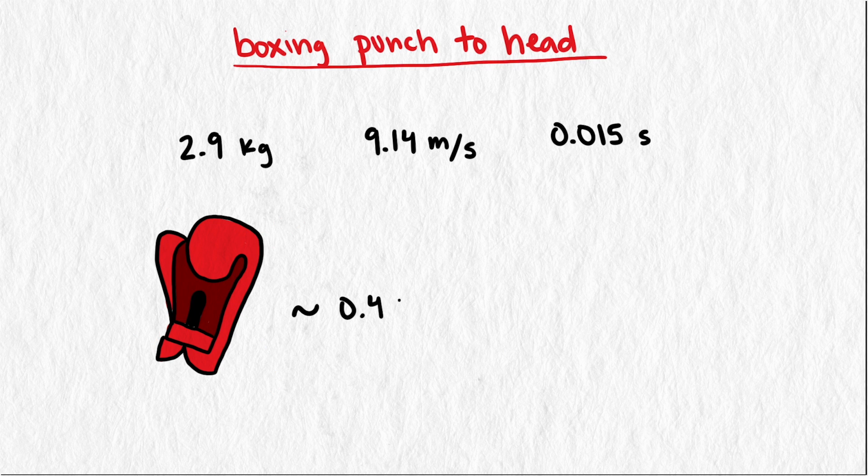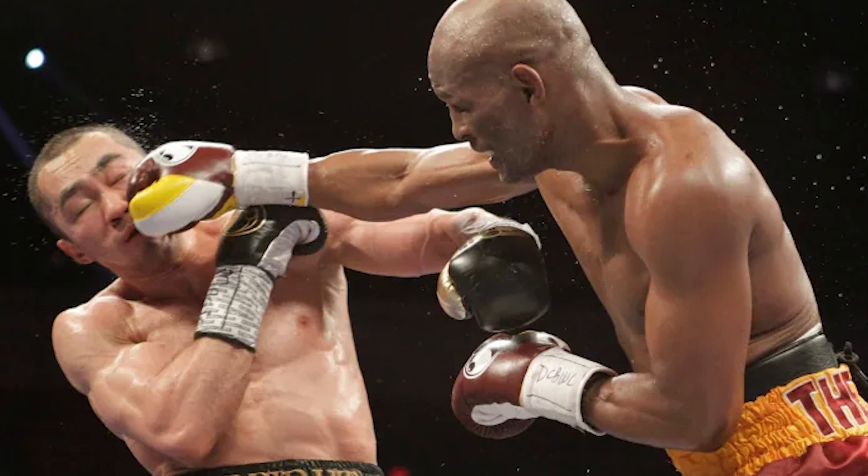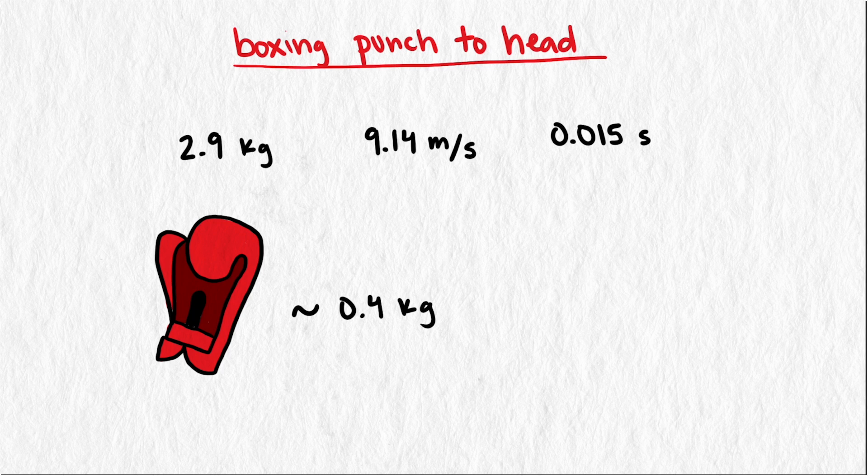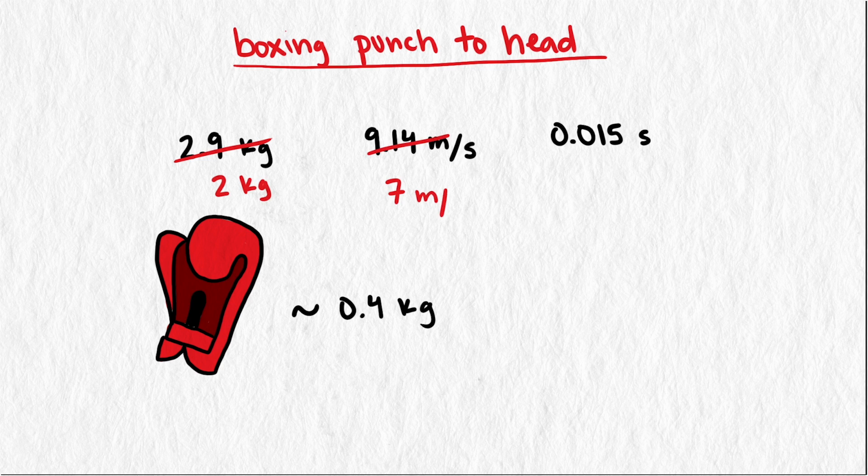A boxing glove has about 0.4 kilograms of mass, plus our boxer is an amateur, so we won't be able to get as much weight behind his punch as a professional. So let's estimate his hand mass as 2 kilograms, reduce the velocity to 7 meters per second, and let's say his contact time is 4 times shorter than a gloved punch. So 0.00375 seconds.